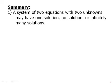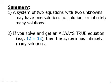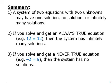In summary, a system of two equations with two unknowns may have one solution, no solutions, or infinitely many solutions. The most common case by far is the one solution case, and that's where you use substitution or elimination and solve for individual values of x and y. If you do that solving, and you get an always true equation, something like 12 equals 12, then the system is always true. It has infinitely many solutions. If you solve and all the variables drop out, and you wind up with a never true equation, something like negative 2 equals positive 9, then the system has no solutions.